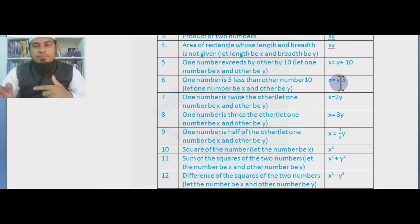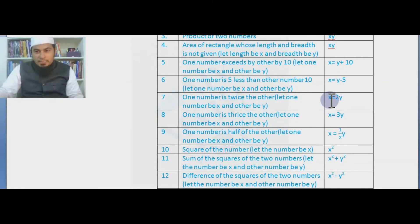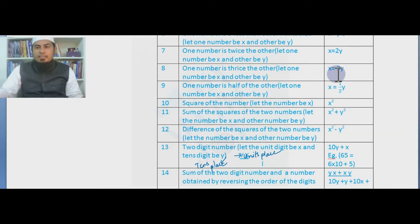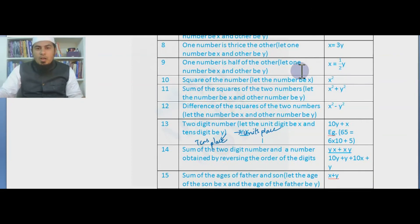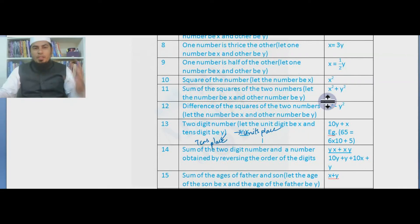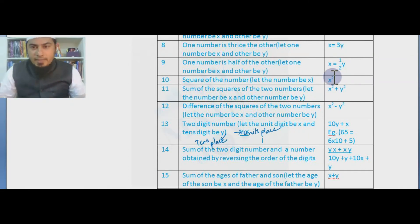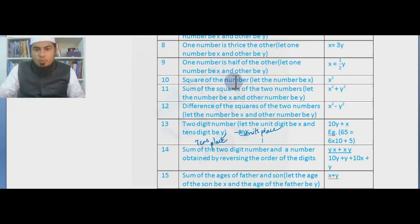One number is twice the other: x = 2y. Similarly, one number is thrice the other: x = 3y. One number is half of the other: x = y/2. One-third, four times, ten times — these can all come similarly. Just these are examples; you can learn many such conversions.